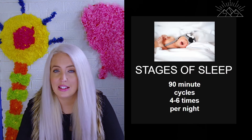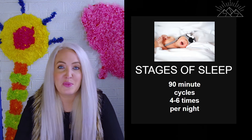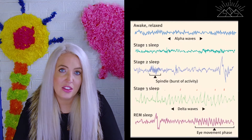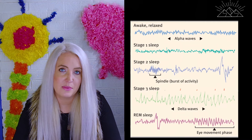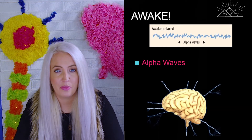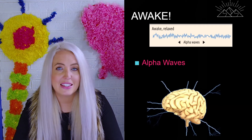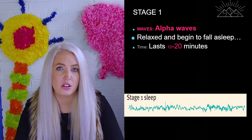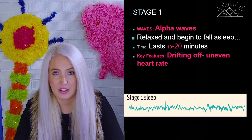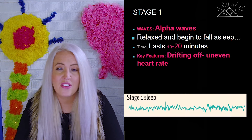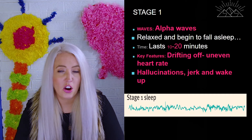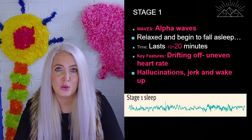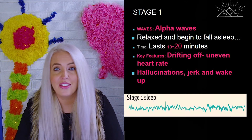Once we do fall asleep, what exactly is happening inside our brains? EEG readings help us see what stage of sleep a person is in based on changes in brain activity. When we're awake, the brain waves we see are known as alpha waves. The sleep cycle begins with stage one, when we are still technically awake and starting to drift off. This can take anywhere from about 10 to 20 minutes. Key features of stage one include an uneven heart rate, occasional hallucinations, and a tendency to twitch or jerk awake, requiring the process to start over.